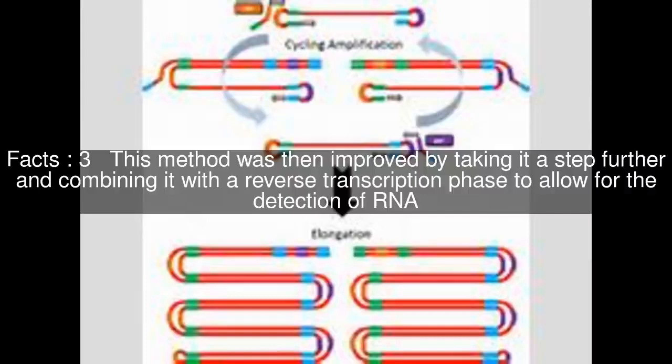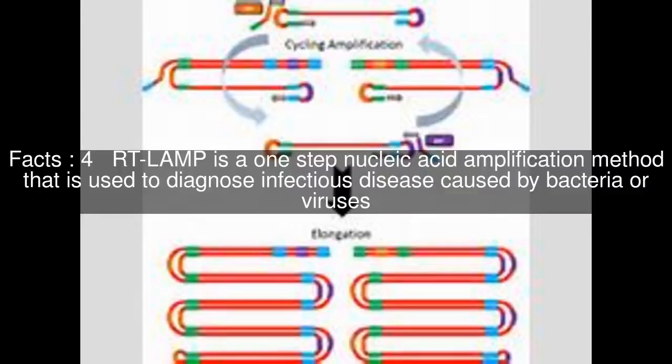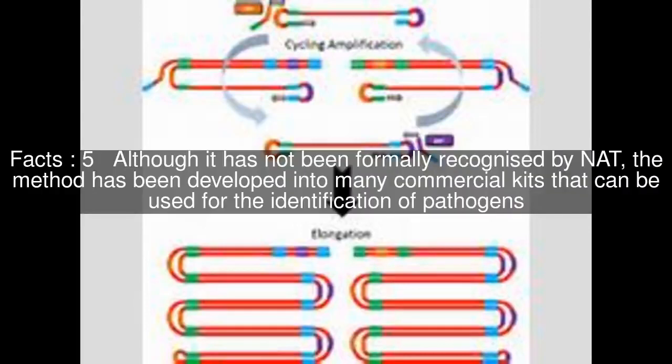This method was then improved by taking it a step further and combining it with a reverse transcription phase to allow for the detection of RNA. RT-LAMP is a one-step nucleic acid amplification method that is used to diagnose infectious disease caused by bacteria or viruses. Although it has not been formally recognized by NAD, the method has been developed into many commercial kits that can be used for the identification of pathogens.